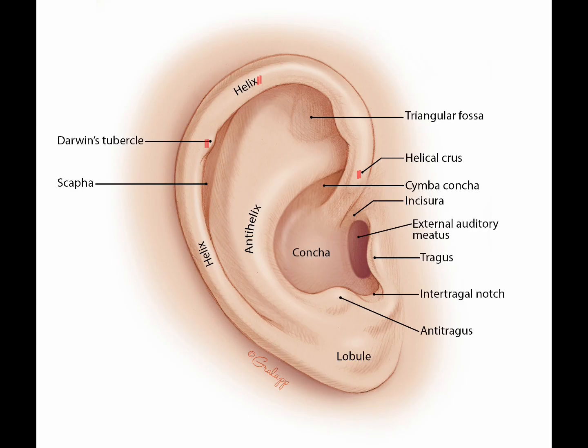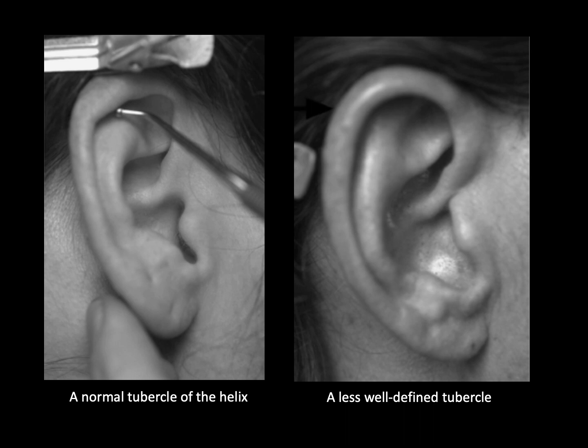Now let's study the anterior aspect of the ear. Let's start with the helix. The helix is the outermost portion of the auricle, consisting of a rim-like structure. The crus of the helix is the beginning of the helix — it originates in the cavum concha. The tubercle of the helix is a small appendage on the medial border of the outer rim of the helix, at the junction of the upper third and middle two-thirds of the helix. This is also called Darwin's tubercle.